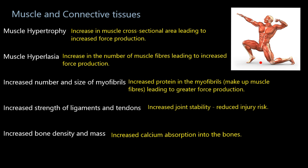Moving to the muscular system and connective tissue — relatively straightforward. Obviously I'm going to get hypertrophy: my muscles are going to increase in their cross-sectional area, become bigger, and therefore have increased force production. But also there's something called hyperplasia. Hypertrophy means each muscle fibre gets bigger and thicker — say you have 10,000 muscle fibres in your bicep, each one gets larger. Whereas hyperplasia is an increase in the number of muscle fibres, so you might go from 10,000 to 12,000. The result of both happening is greater muscle size and an increase in force production.